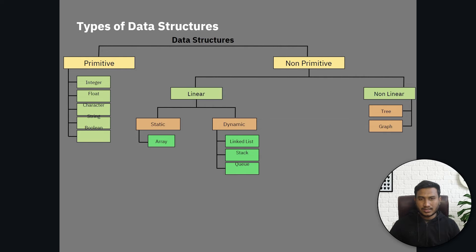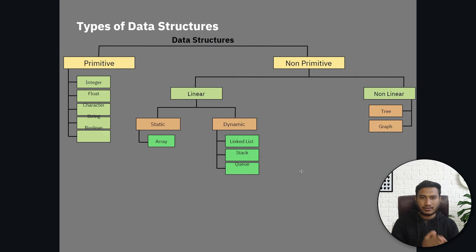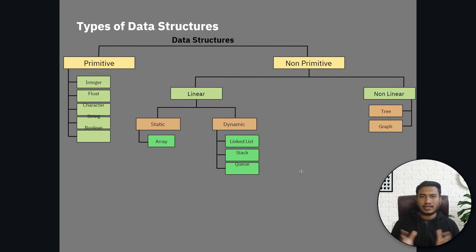When you use non-primitive data structures, they use something called a pointer in memory — with the help of pointers these data structures work. There is another kind of non-primitive data structure which is non-linear. Non-linear includes tree and graph. The difference between linear and non-linear: linear data structure is a sequence of data where the first data point is connected to the next, and so on sequentially. In non-linear data structure, there is no sequence — you can define data anywhere and make connections between them, creating a hierarchy.